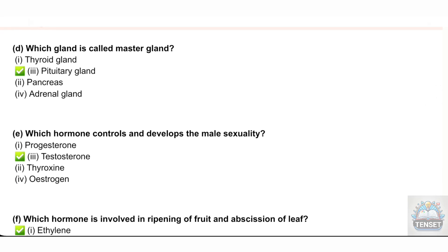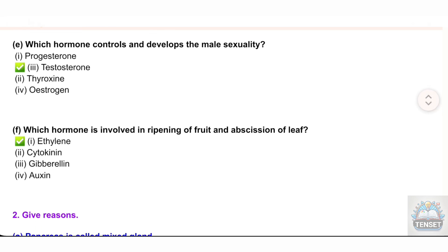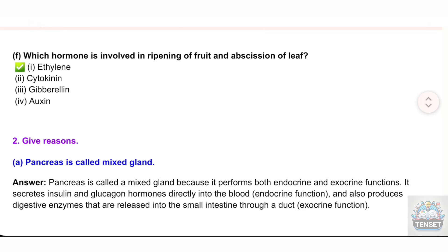E) Which hormone controls and develops male sexuality? Options: i) Progesterone, ii) Testosterone, iii) Thyroxine, iv) Estrogen. F) Which hormone is involved in ripening of fruit and abscission of leaf? Options: i) Ethylene, ii) Cytokinin, iii) Gibberellin, iv) Auxin. Question 2: Give reasons. A) Pancreas is called a mixed gland. Answer: Pancreas is called a mixed gland because it performs both endocrine and exocrine functions.